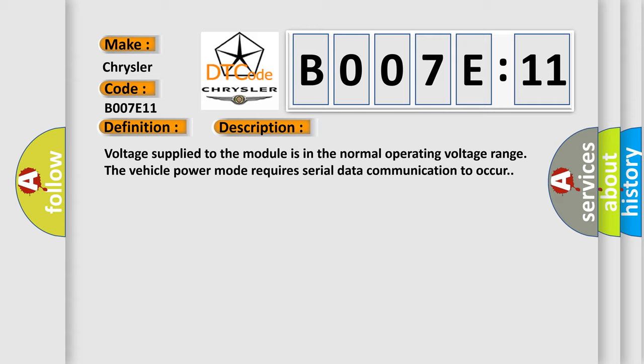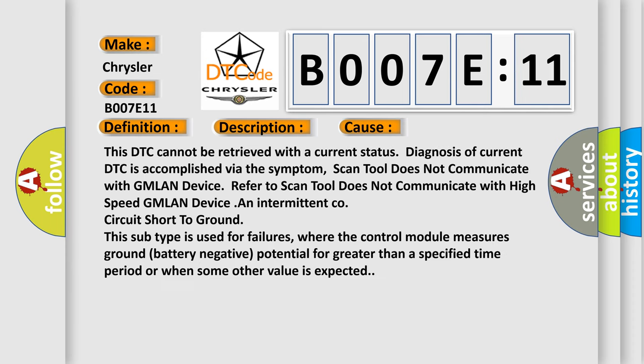This diagnostic error occurs most often in these cases. This DTC cannot be retrieved with a current status. Diagnosis of current DTC is accomplished via the symptom: scan tool does not communicate with GMLAN device. Refer to scan tool does not communicate with high-speed GMLAN device.